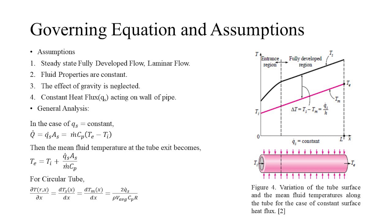We will now have a brief discussion about the governing equations which describe the behavior of flow through a pipe. We have assumed the flow to be steady, fully developed laminar, and with its properties being constant. Additionally, the effect of gravity is neglected. By conservation of energy equation and simple rearranging, we can find out the exit temperature T_E of the fluid. The figure on the right depicts the meaning of the equation at the bottom, which tells that the rate of increase or decrease of both the surface temperature and the mean temperature would be the same after the entry length.